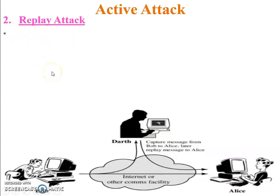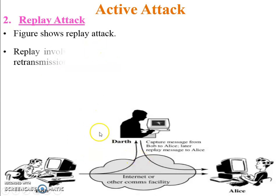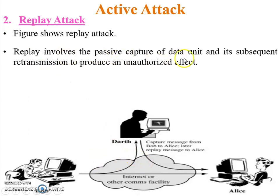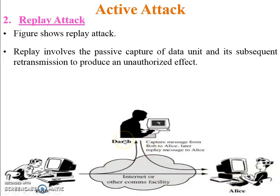Second one: replay attack. The figure shows the replay attack. A replay attack involves the passive capture of a data unit and its subsequent retransmission to produce an unauthorized effect. For example, Bob sends a message to Alice, but before the message reaches Alice, Darth captures the message and then replays it to Alice, and we can say modifies the message.